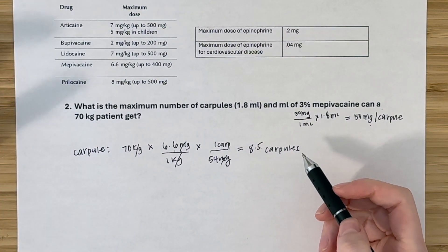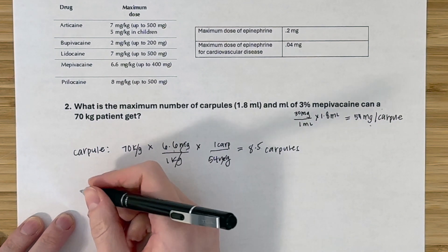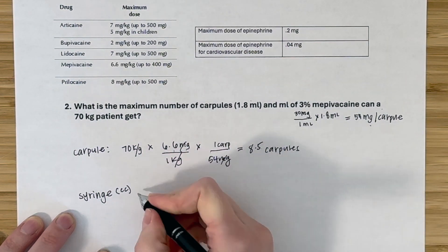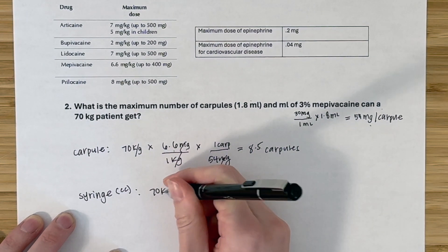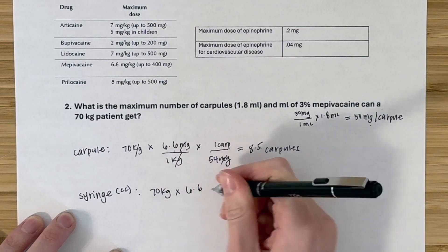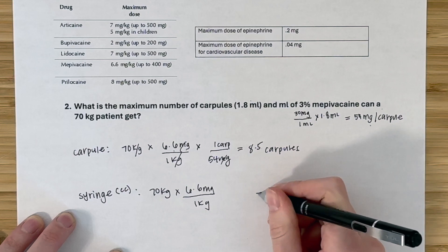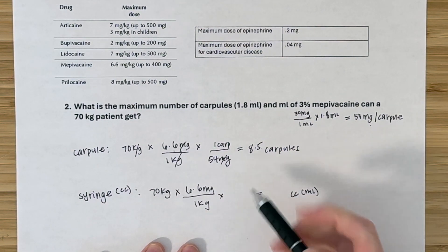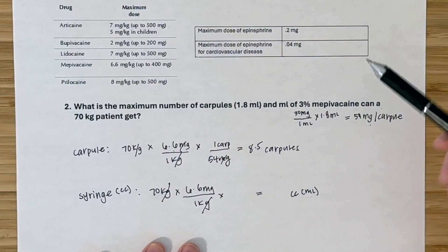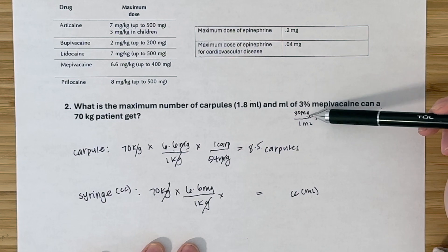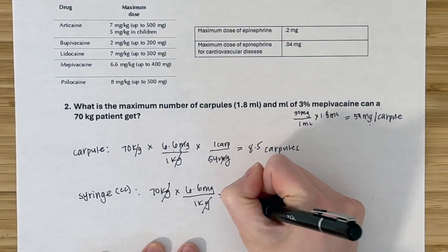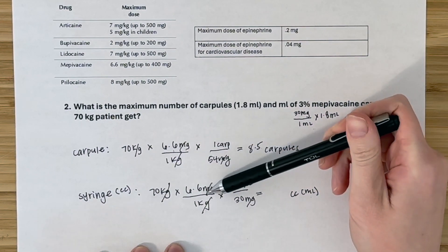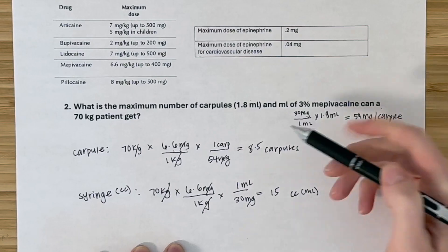Now if you have a vial of mepivacaine and need to draw up the maximum in cc's: start with 70 kg × (6.6 mg/kg). Kilograms cancel out. Since 3% means 30 milligrams per milliliter, place 30 on the bottom so milligrams cancel, leaving milliliters. So 70 × 6.6 ÷ 30 gives approximately 15 cc's.